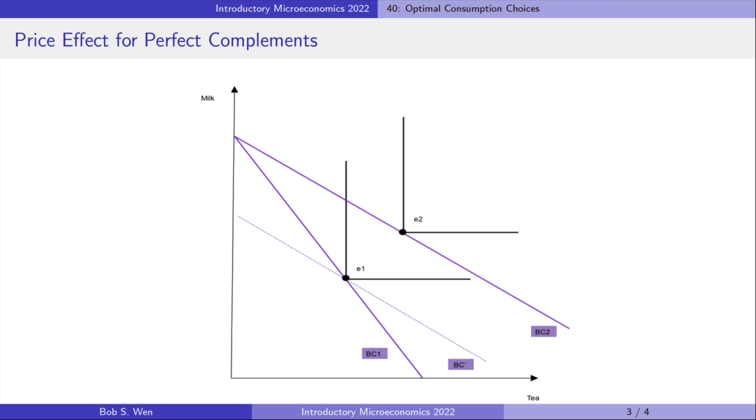We find that there is no substitution effect of the price change. Regardless of the relative price, the consumer must consume the perfect complements in a fixed proportion.